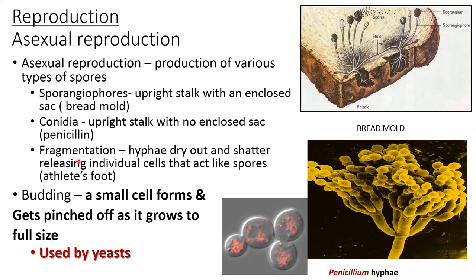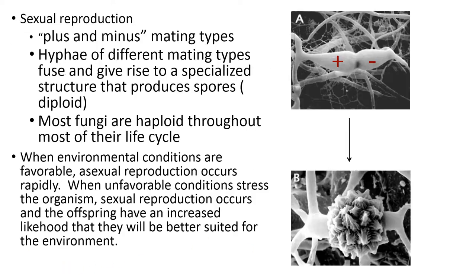Third is fragmentation — the hyphae dry out and shatter, releasing individual cells that act like spores; an example is athlete's foot. Fourth is budding — small cells form and get pinched off as they grow into full size; an example is yeast. In sexual reproduction, plus and minus mating types are observed. Hyphae of different mating types fuse to form a zygote, giving rise to a specialized structure that produces spores, which are diploid.